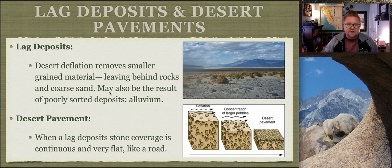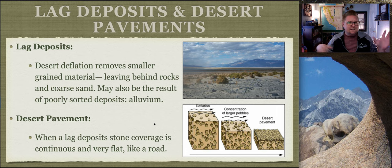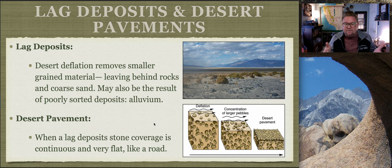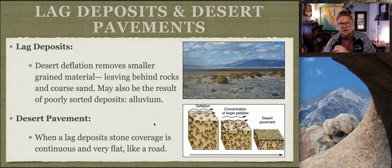Lag deposits may also result from poorly sorted deposits such as alluvium. Alluvium is flash flood material - when it rains on a large mountain and brings down material, especially in a desert region, that deposit is not ordered. It's deposited as a large teardrop or fan shape, called alluvial fans. Alluvium is any material moved by running water, traditionally not consolidated and usually very poorly sorted.